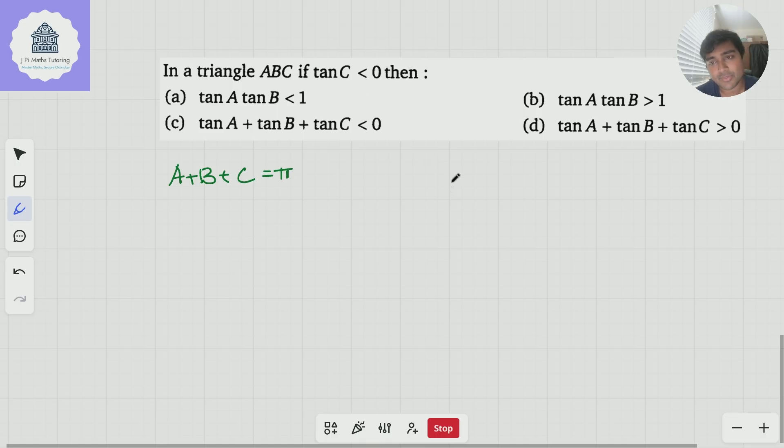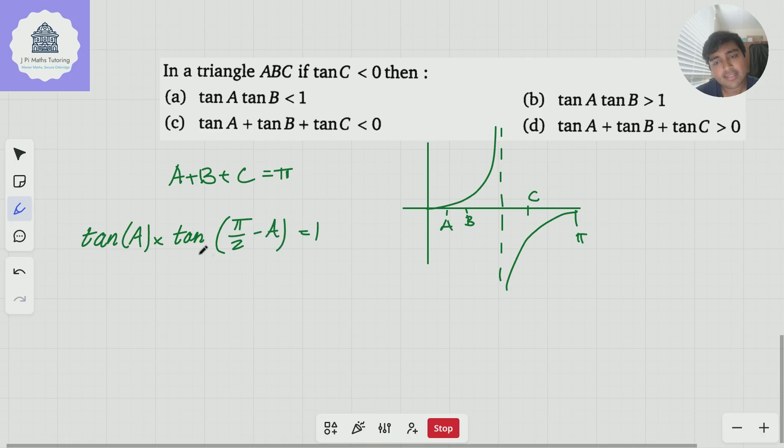We know that tan of C is negative, so if we just think about a graph of tan, it looks something like this, and that there is π. So tan of C is negative, so C has to be bigger than π/2 and less than π, and so we have maybe A is here, and B is here, for example. So the question is, is tan of A times tan of B less than 1 or bigger than 1? Let's answer that, and we're going to use a nice little fact here.